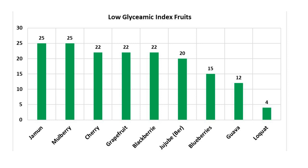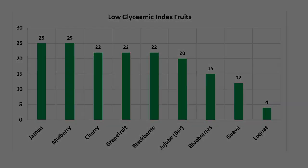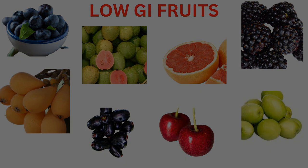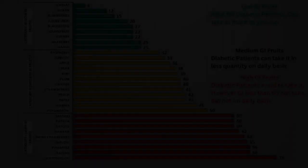This low GI category consists of nine fruits. Jaman is on top with a GI of only 25, and all other fruits have a GI below 25. These include blueberries, guava, blackberries, grapefruit, cherry, and mulberry. All these fruits are full of nutrients and suitable for diabetic patients.